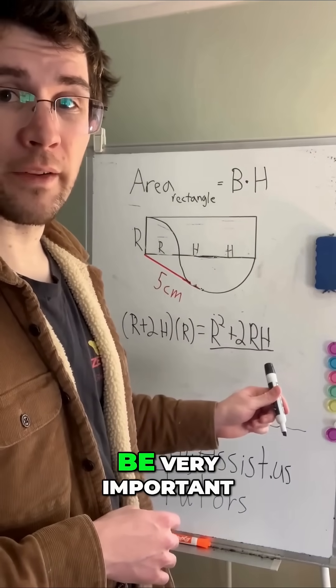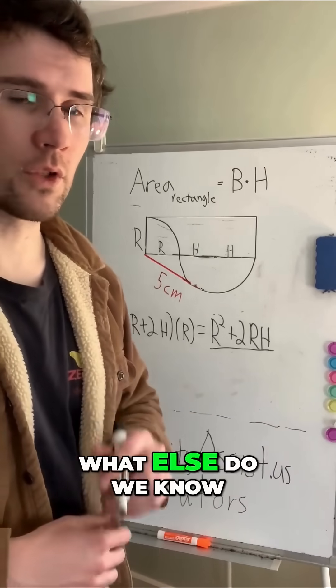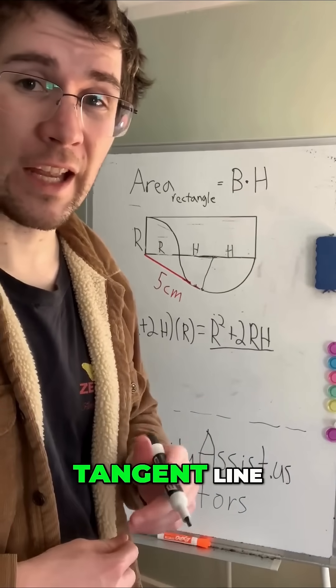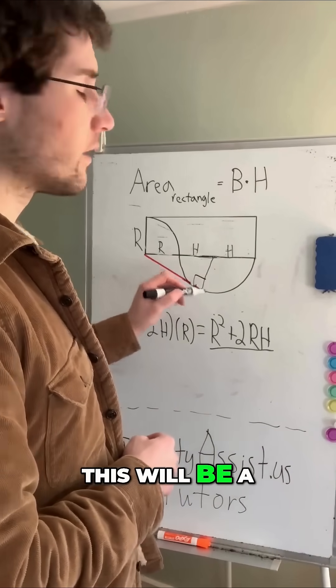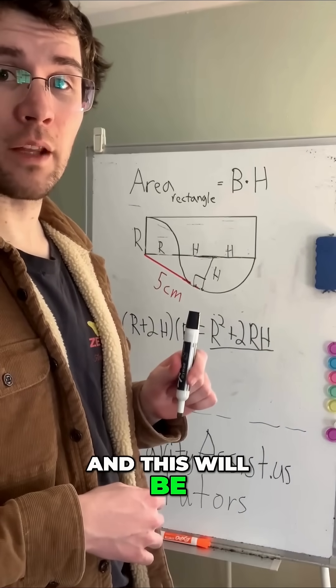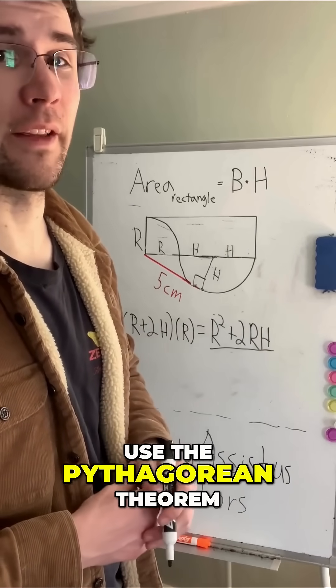This is going to be very important, so we won't forget that. Now, what else do we know? Well, a radius will always be perpendicular to its tangent line. So this will be a right angle. This will be another one of our radius lengths, and this will be a great time to use the Pythagorean theorem.